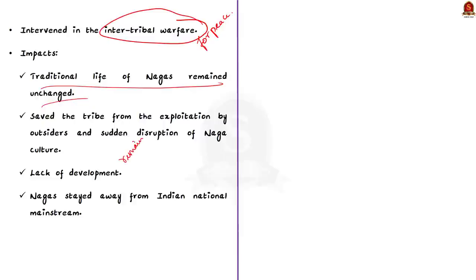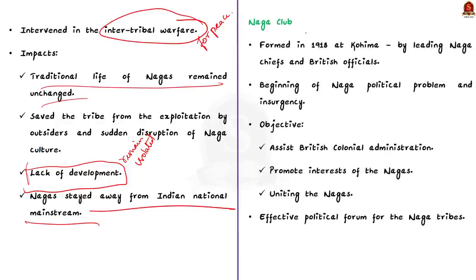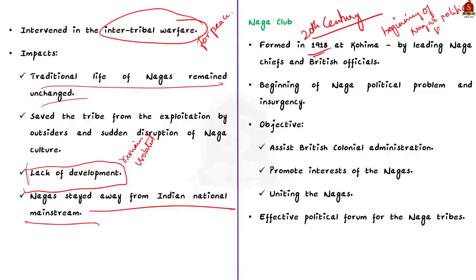Changes started occurring in the 20th century. The main turning point happened in 1918 with the formation of the Naga Club. This event is said to be the beginning of the Naga political problem and assisted in tuning the psychological phase of Naga insurgency. The Naga Club was formed at Kohima with the objective of assisting the British colonial administration while promoting the interests of the Nagas and uniting them. It was formed by leading Naga chiefs along with British officials and was an effective political forum for leaders of different Naga tribes. The club played an important role in the search for a common Naga identity and started the Naga movement, which claimed a distinct ethnic identity and demanded an independent homeland for the Nagas.